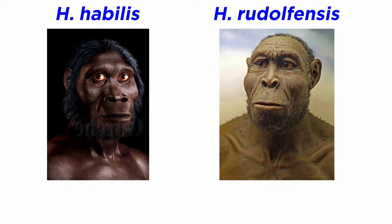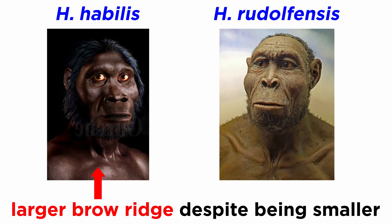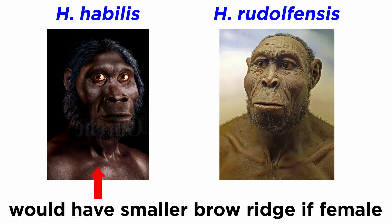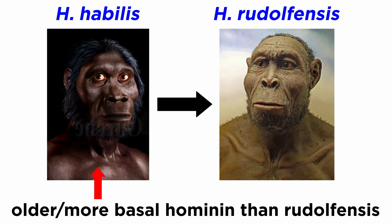In the case of Homo habilis and Homo rudolfensis, the smaller species, Homo habilis, has the larger brow ridge. This is a mixed signal if the two species were a single dimorphic one — the smaller individuals, presumed female, should have the smaller brow ridges as well. Instead, it appears that Homo habilis is an older, perhaps more basal-looking hominin as compared to the larger-brained, flatter-faced Homo rudolfensis.